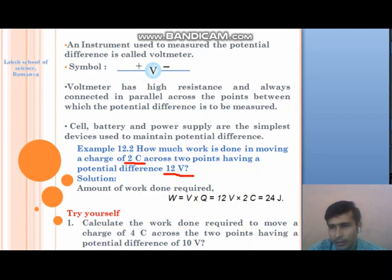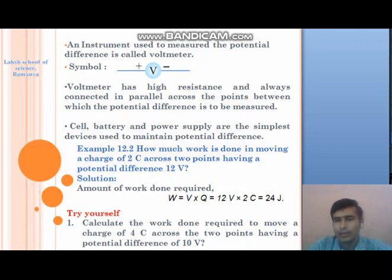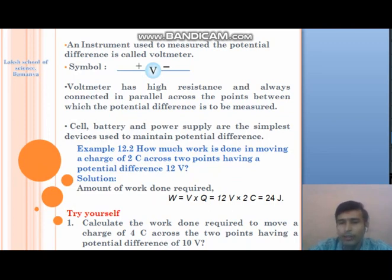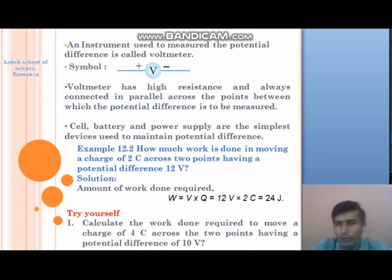Here is a practical example: how much work is done in moving a charge of 2 coulomb across two points having a potential difference of 12 volt? Given Q = 2 coulomb, V = 12 volt. Using V = W/Q, W = V × Q = 12 × 2 = 24 joule. So 24 joule of work is required to move 2 coulomb of charge across a potential difference of 12 volt.